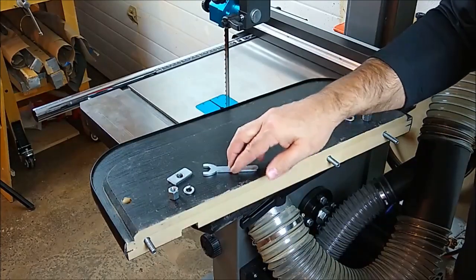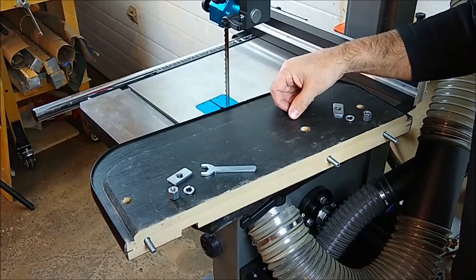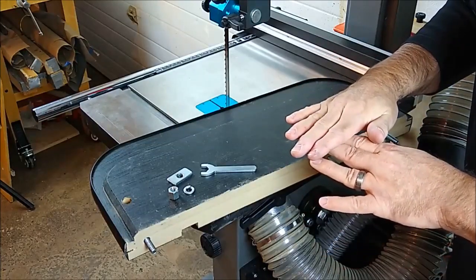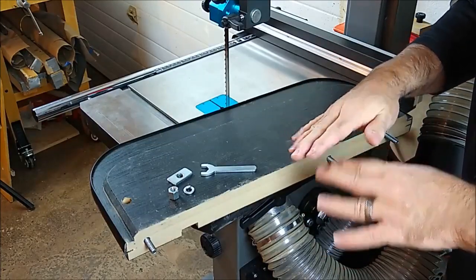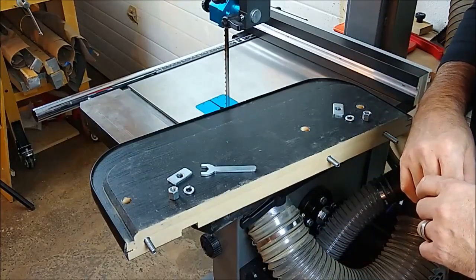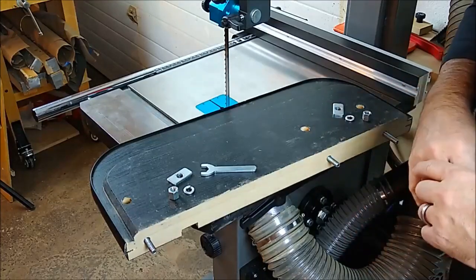A little wrench from McFeely's is really the thing to have to tighten those home. But just make sure when you're setting the table that it's either flush with the table or slightly lower than the table. You don't want anything to hang you up as you're feeding workpieces over the saw. But if you're flush or slightly lower than flush, it really works well.